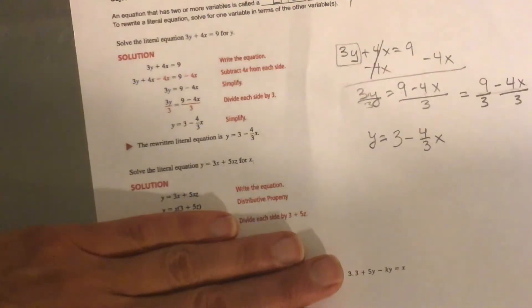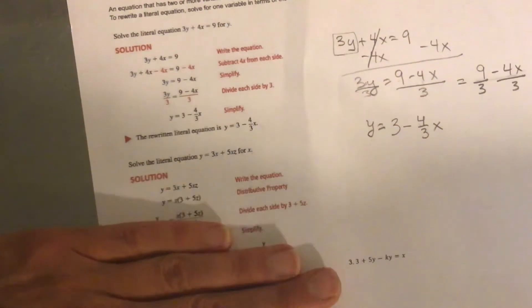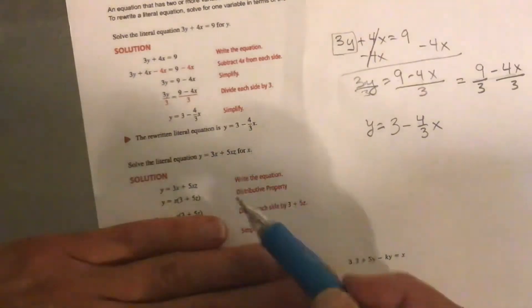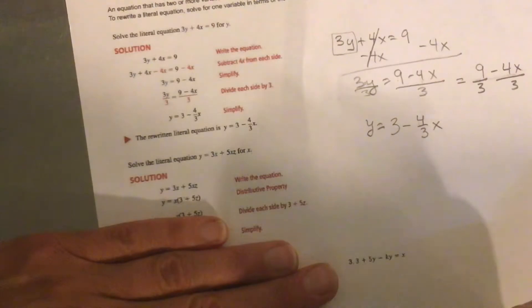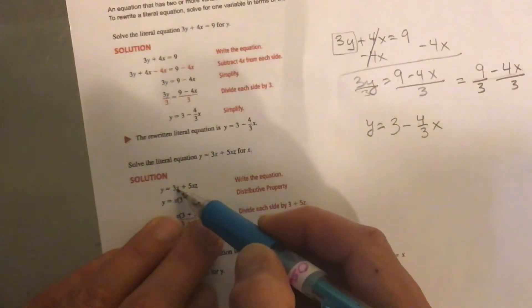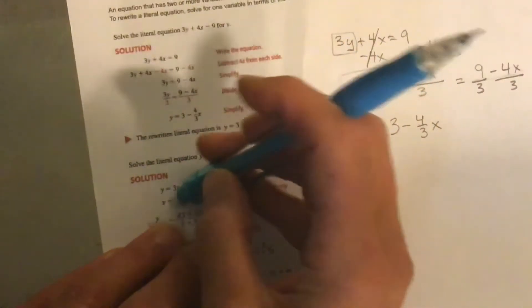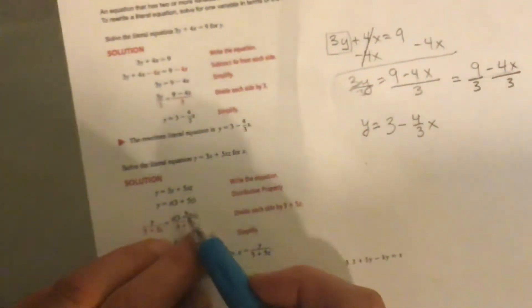So if you notice, x is in two different spots. So you're going to do something that you haven't really done with variables at all yet. But it's kind of like the opposite of distribution. So I'm going to take it out. So they call this distributive property. They're going to take it out. Does that make sense? So now if you take the x out of this term, you've got 3. And if you take the x out of this term, you've got 5z. So now I've got, again, I'm solving for x.